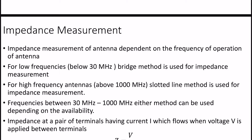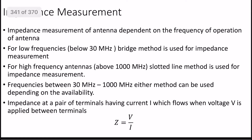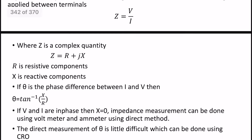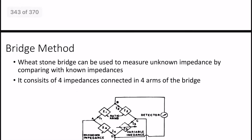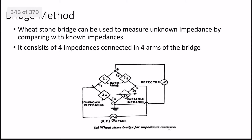This is the high frequency range — 1000 MHz in the middle. For frequencies in between, we have to use the appropriate method. Now, what is the bridge method? For low frequency, impedance measurement uses the technique of the bridge method.